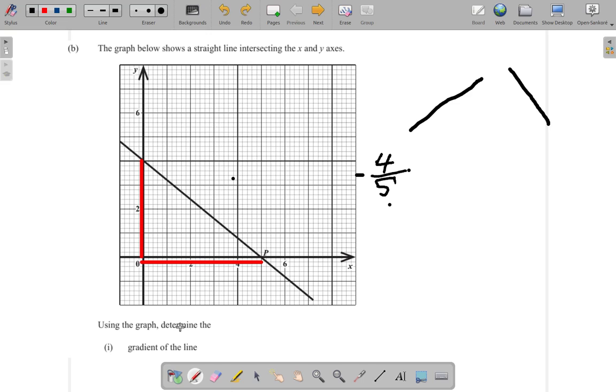It asks us to use the graph. So, we didn't bother to use any calculation like y2 minus y1 over x2 minus x1. That's calculation. It asks us to use the graph. So, we look at the graph, and from there, we deduce what the gradient of the line is. We show the gradient of the line.